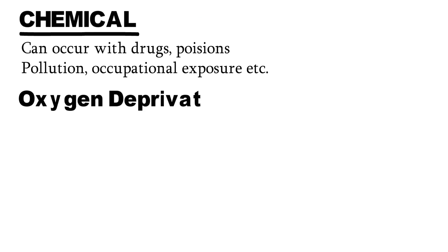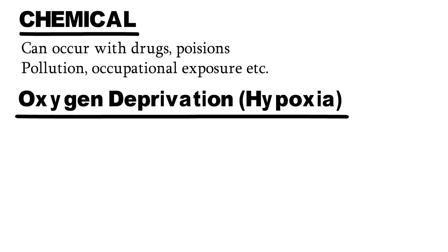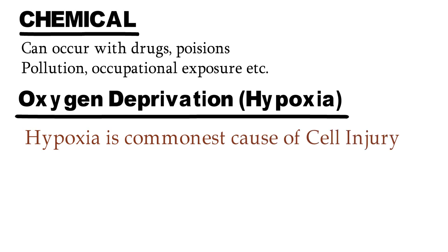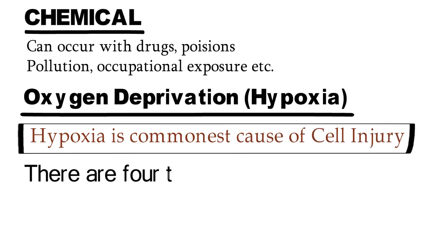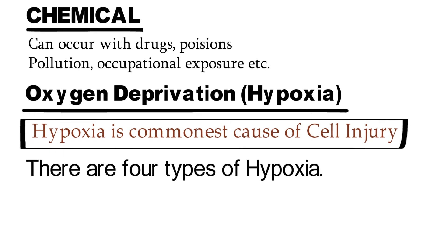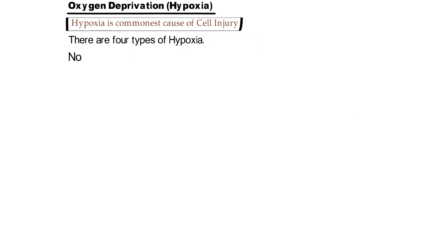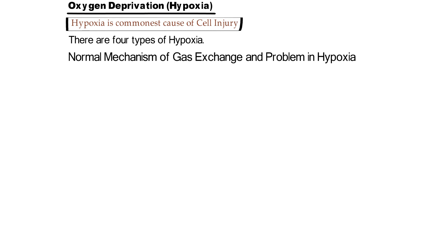The second cause is oxygen deprivation, meaning hypoxia. This is one of the most important cell injury-causing agents, so we will discuss it a little more deeply. Hypoxia is the most common cause of cell injury — this one is high yield. Hypoxia is basically of four types. To understand hypoxia, let us briefly discuss the normal gas exchange mechanism, and then find out where the problem lies.